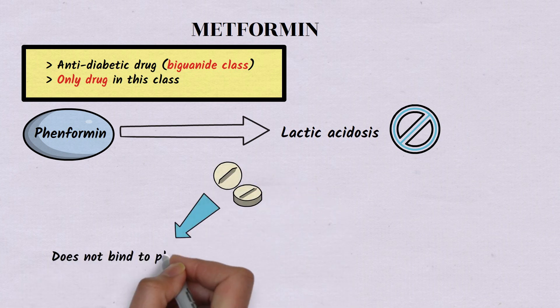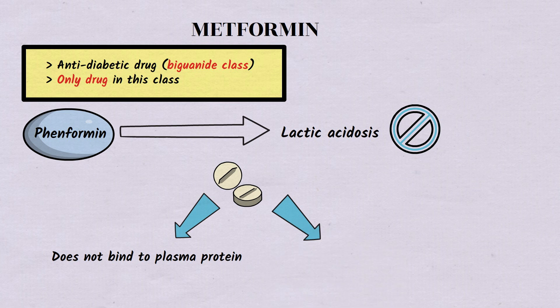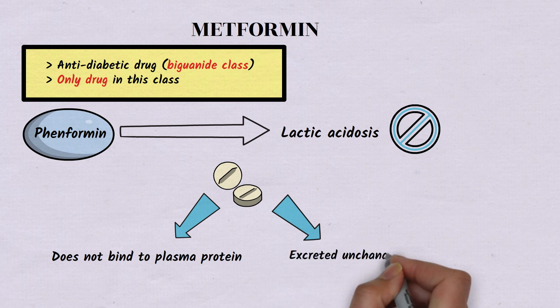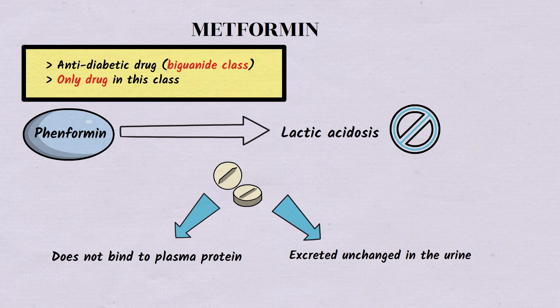Metformin does not bind to plasma protein. It is excreted unchanged in the urine and hence is contraindicated in renal failure.